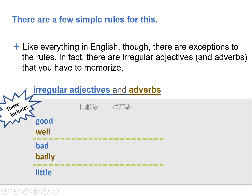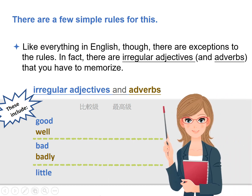Like everything in English, though, there are exceptions to the rules. In fact, there are irregular adjectives and adverbs that you have to memorize. These include: good or well — better — best; bad or badly — worse — worst; little — less — least.